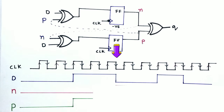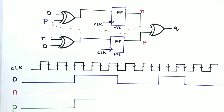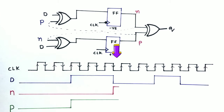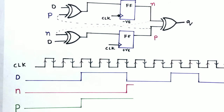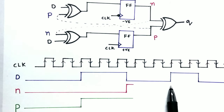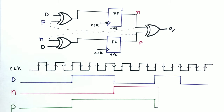At the next negative edge: D is zero and P is one, so XOR gives output one. This one is passed through the negative edge trigger flip-flop, so N becomes one from this negative edge. Continuing the analysis at the next positive edge: D is one and N is one, so the XOR output is zero. Since it's happening at the positive edge, P becomes zero. Then at the following negative edge: D is zero and P is zero, so XOR output is zero, and N remains zero.